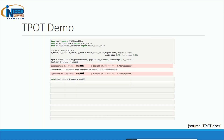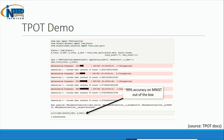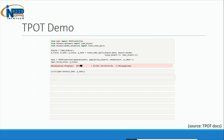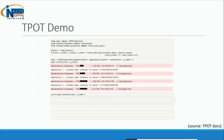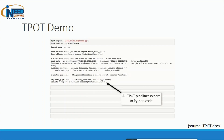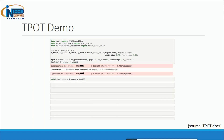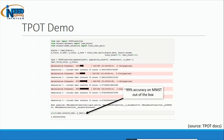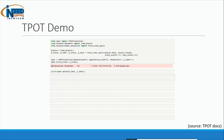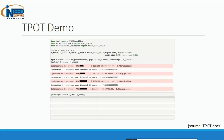Here you can see a demo of TPOT. Its developers say that TPOT has got genetic search algorithms to find the best parameters and better model ensembles. You can think of it as natural selection or evolutionary computing. TPOT tries a pipeline, evaluates the pipeline's performance, and randomly changes parts of the pipeline while searching for a better solution. In this demo, you can see that it finally gives us a solution having around 99% accuracy.